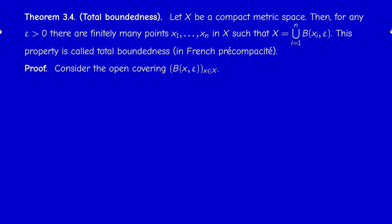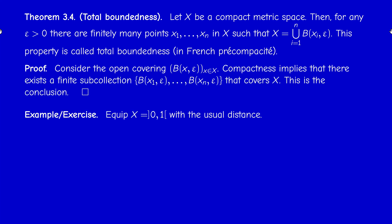This is a direct consequence of the definition. Just consider the open covering of balls of variable center and fixed radius epsilon. The union of all these balls equals X, giving an open covering of X. Compactness of X dictates that finitely many elements of this collection cover X, and this is the conclusion. Note that we can replace open ball by closed ball.